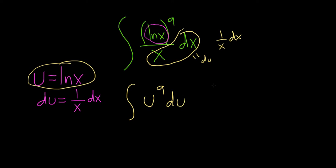Now we're in a position where we can use the power rule. So the power rule says that we just add 1 to the exponent and divide by the result. So this is u to the tenth over 10 plus our arbitrary constant of integration.